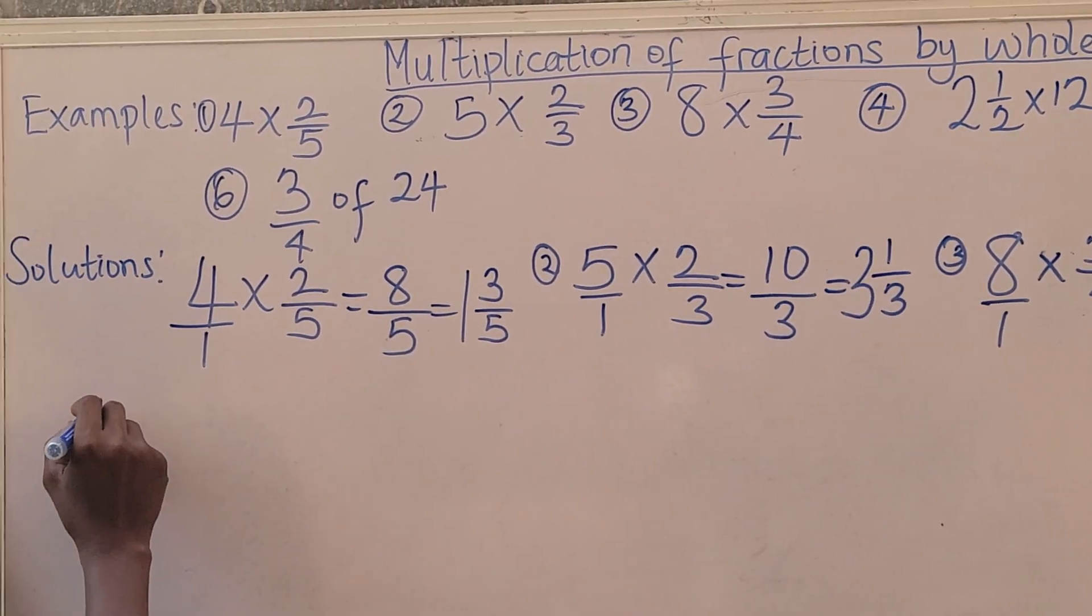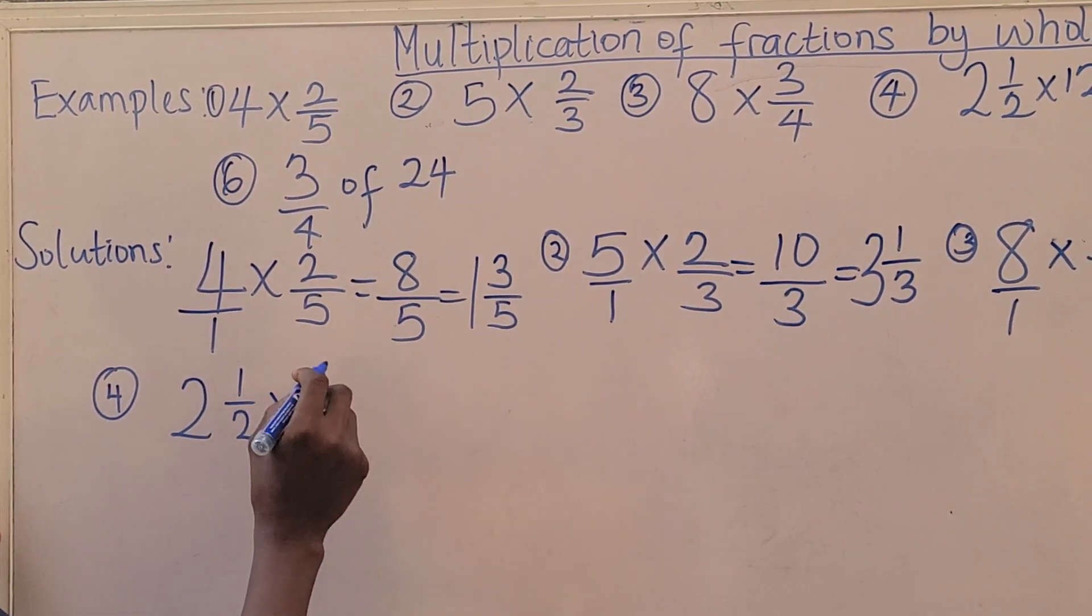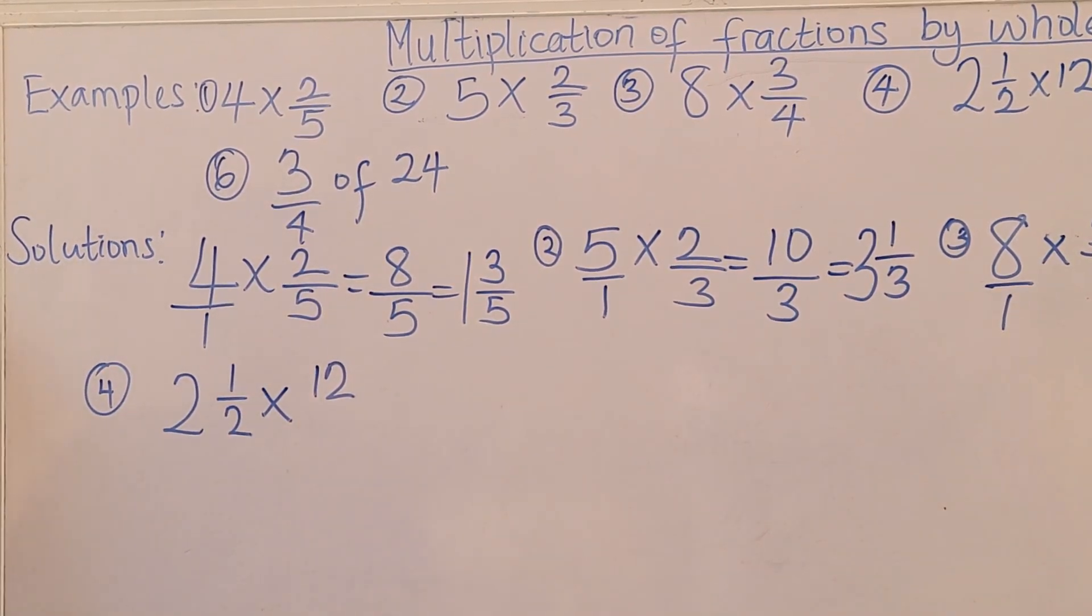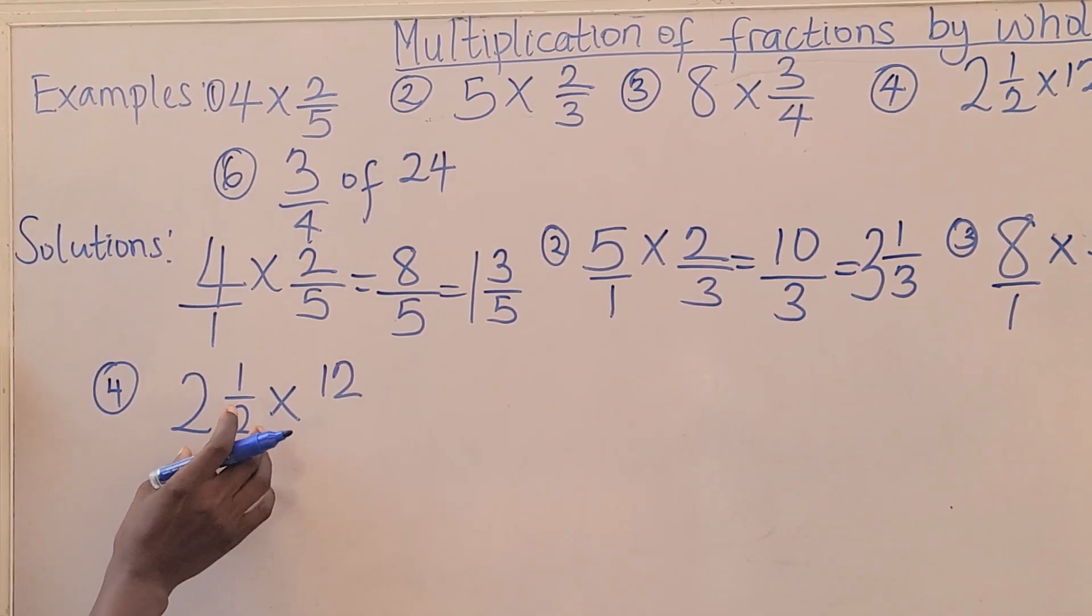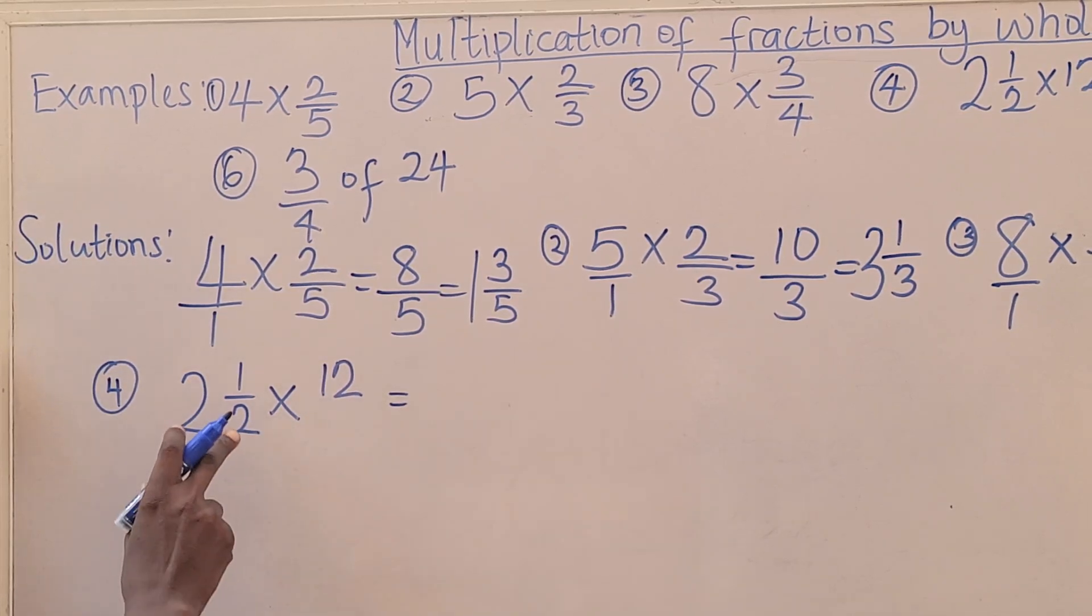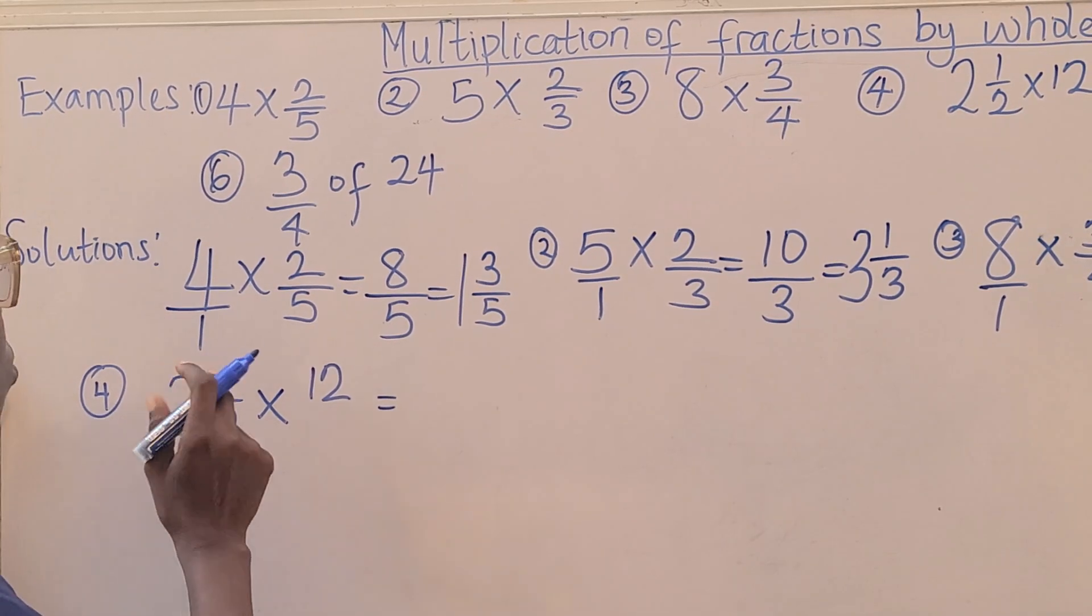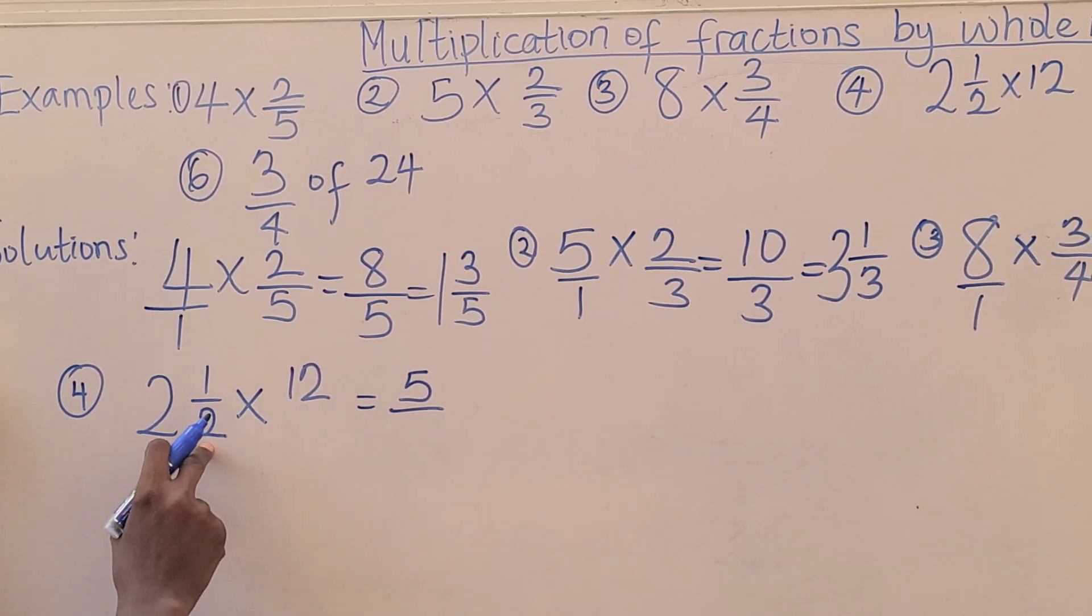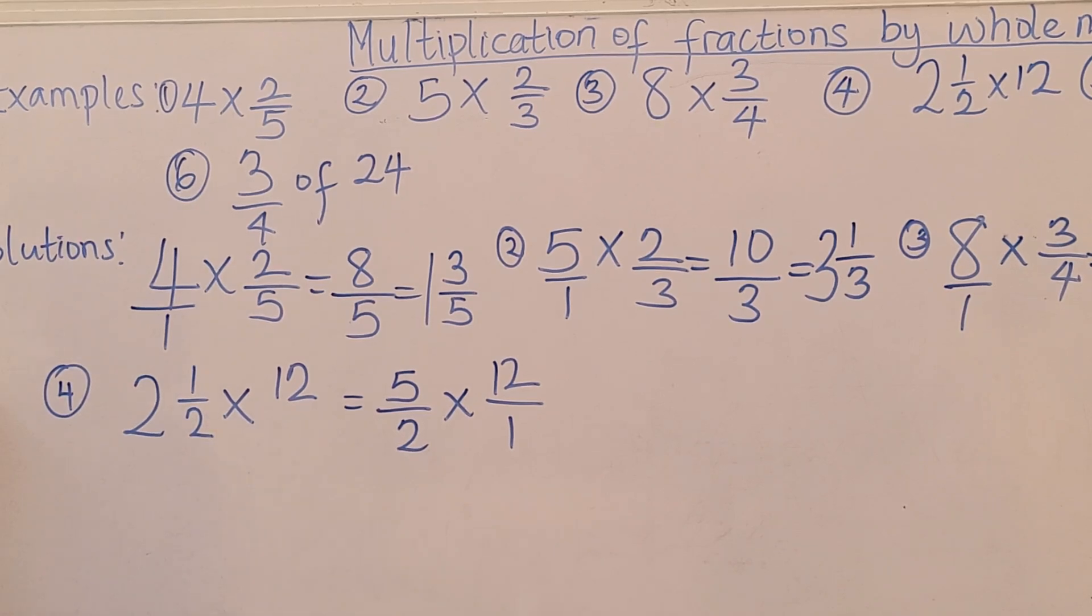Then let's go to number 4. 2 whole number, 1 over 2. Now this is a mixed number. Mixed fraction multiplied by a whole number. Actually, there are two ways to do this, but I'll follow this formula I've been using this same way. The first thing you do is to convert this to an improper fraction. And this is how to go about it. 2, the denominator multiplied by the whole number. 2 times 2, 4, plus 1. That's going to be 5.